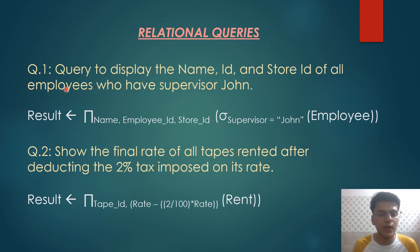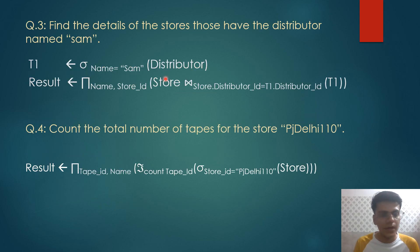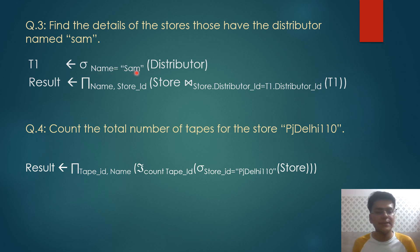We will now do relational queries. The first relational query is to display the name, employee ID, and store ID of all employees who have no supervisor — condition: supervisor must be null, from the table employee. The second relational query shows the final rate of all tapes after deducting two percent tax, selecting tape ID with the operation on rate from relation rent. The third relational query finds store details for distributor named Sam: we store the data for that distributor in T1, then join T1 to the store on distributor ID, extracting name and store ID.